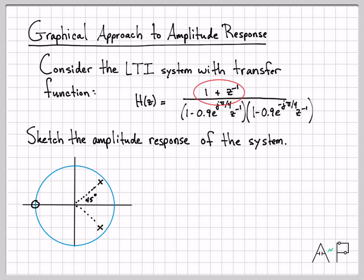The zero of the system is when z is equal to negative 1, because when z is negative 1, z inverse is negative 1, and then 1 minus 1 is 0. So there's my zero of the system right at the point z equals negative 1.